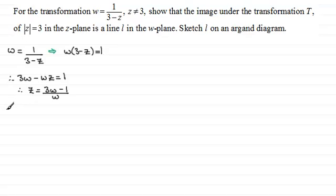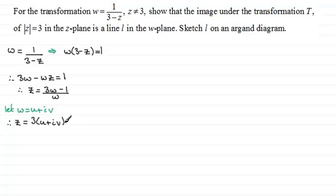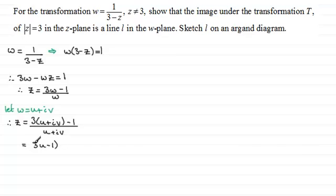Now I'm going to let w equal u plus iv. So therefore z equals 3 times w, that would be 3 times u plus iv, then minus 1, all divided by w which is now u plus iv. Expanding the bracket and grouping real and imaginary parts, we have 3u minus 1 as the real part, and then plus 3v times i — so 3v and then i — and this is all divided by u plus iv.